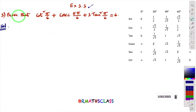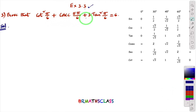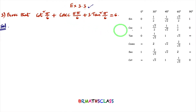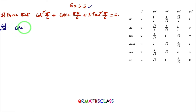This is the third problem in exercise 3.3: cot²(π/6) + cosec(5π/6) + 3·tan²(π/6) = 6. In this problem, cosec(5π/6) is not in the trigonometry table, so we need to calculate its value first.